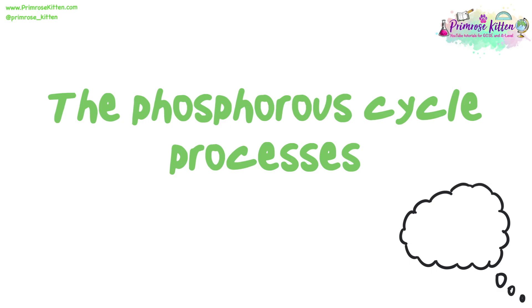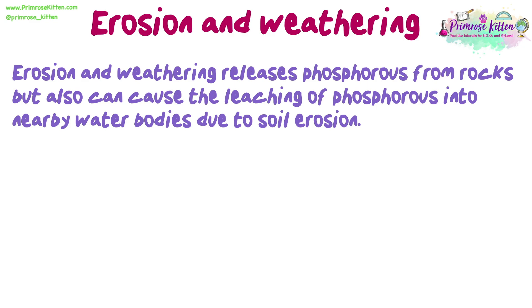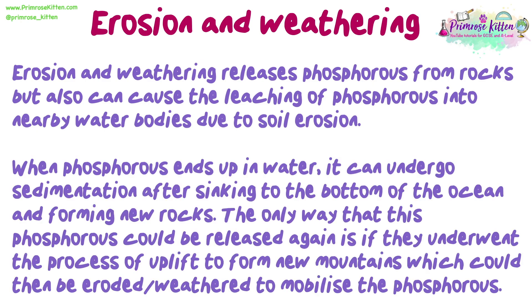The phosphorus cycle processes. Erosion and weathering releases phosphorus from rocks, but can also cause the leaching of phosphorus into nearby water bodies due to soil erosion. When phosphorus ends up in water, it can undergo sedimentation after sinking to the bottom of the ocean and forming new rocks. The only way this phosphorus could be released again is if it underwent the process of uplift to form new mountains, which could then be eroded or weathered to mobilise the phosphorus.